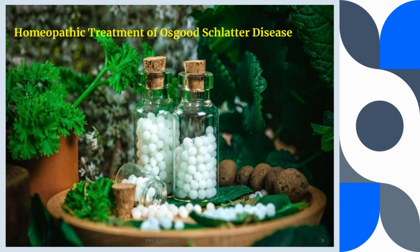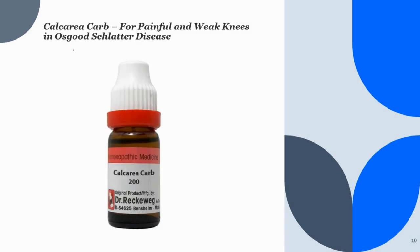Homeopathic medicines work well to help relieve the symptoms of Osgood-Schlatter disease. These medicines help relieve knee pain and, since they are made of natural substances, can be safely used without any side effects. The first and foremost medicine is Calcarea Carbonica, which is used for painful and weak knee in Osgood-Schlatter disease.